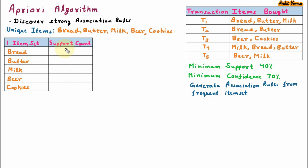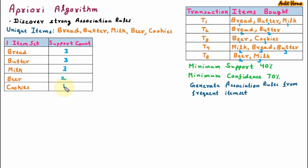Now we are taking the one-itemset and its support count. One-itemset means the individual item. We are putting all the unique items into a table. Support count means how many times an individual item appears in the dataset. Bread appears three times, so support count is three. Butter appears three times, so support count is three. Milk appears three times, so support count is three. Beer appears two times, so support count is two. Cookies appears only one time, so support count is one.